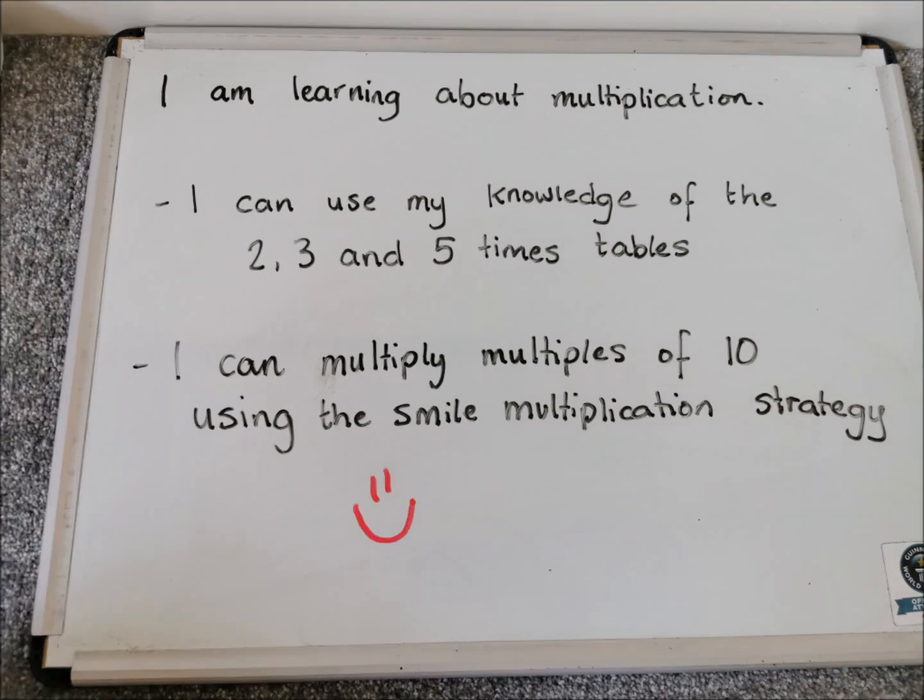So that's numbers like 10, 20, 30, 40, on and on and on in the 10 times table. And thinking about how we can use this strategy called SMILE multiplication to help us with our sums.